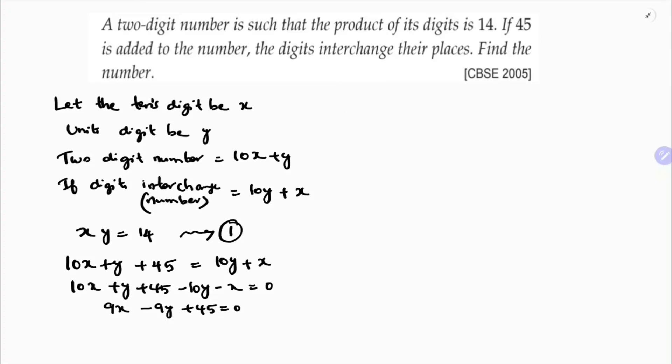If I take 9 common, so x minus y, 9 times 5 is 45. So x minus y plus 5 equals 0 by 9. 0 by 9 is 0. This is equation two.